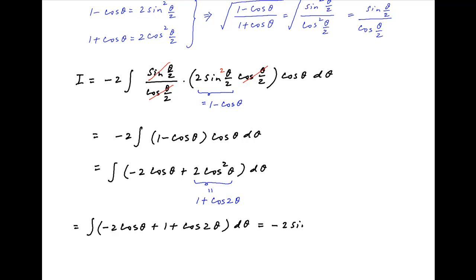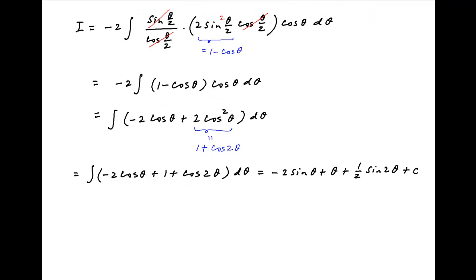This is equal to minus 2 sin theta plus theta plus half of sin 2 theta plus the constant of integration.